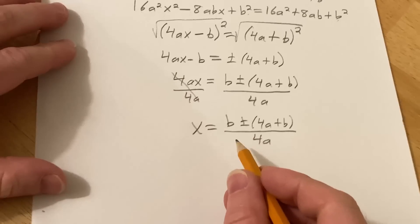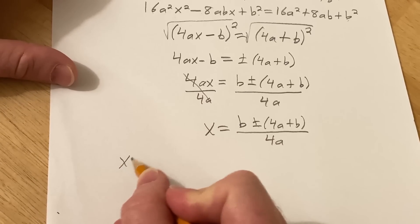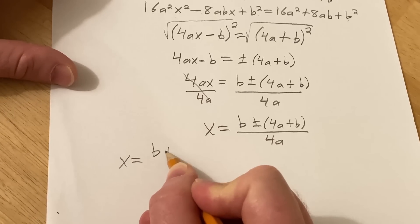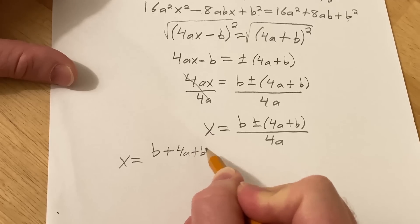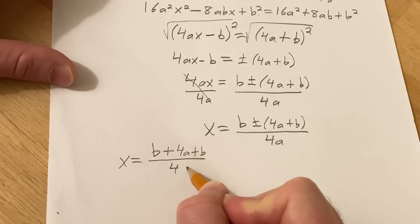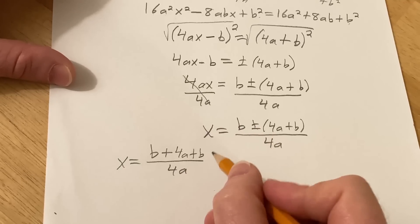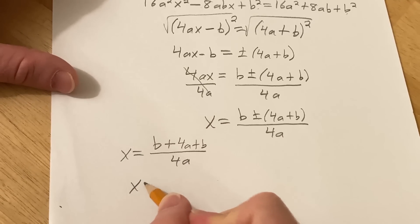So let's take cases. Let's take the plus case first. So the plus case is x equals b plus 4a plus b over 4a. So 4a plus b over 4a. That looks right, b plus 4a plus b.